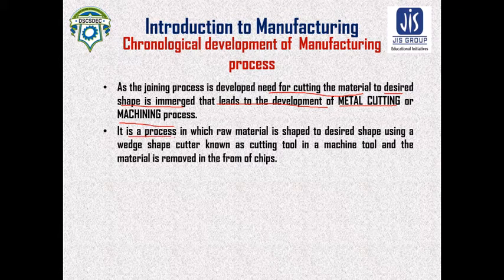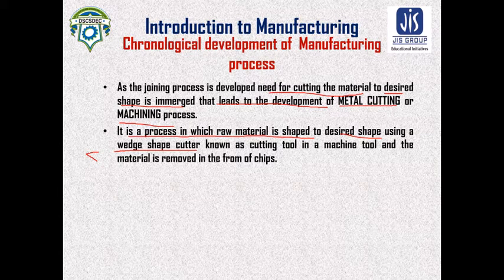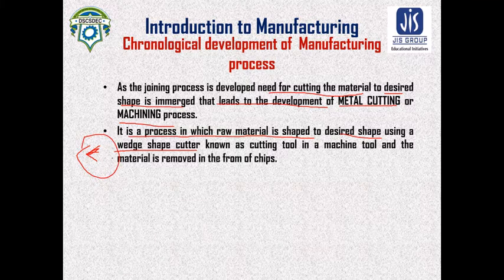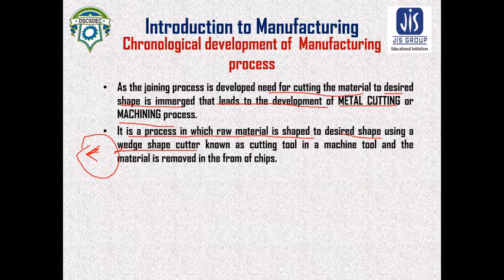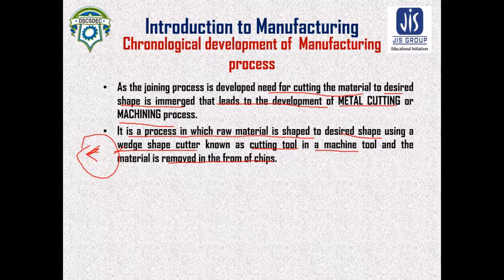Machining is a process in which raw material is shaped to a desired shape using a wedge-shaped cutter. The wedge-shaped cutter has a pointed edge and is known as the cutting tool in a machine tool. The material is removed in the form of chips.